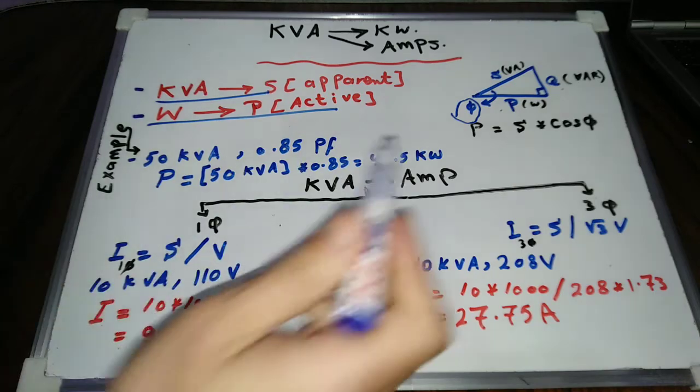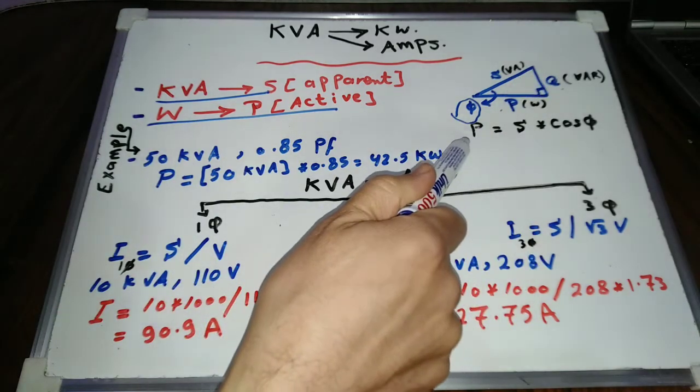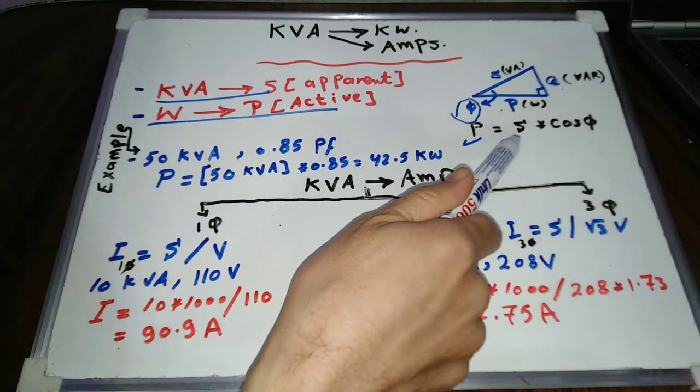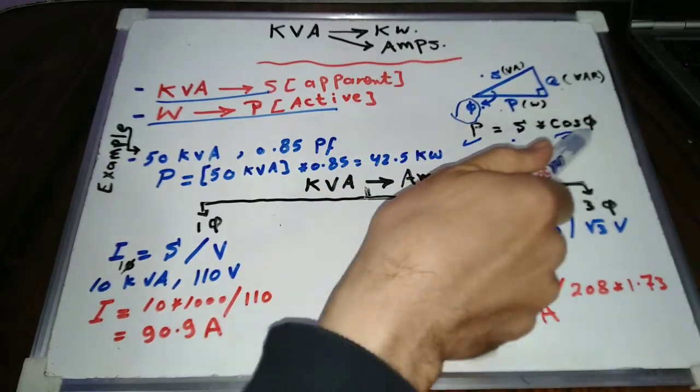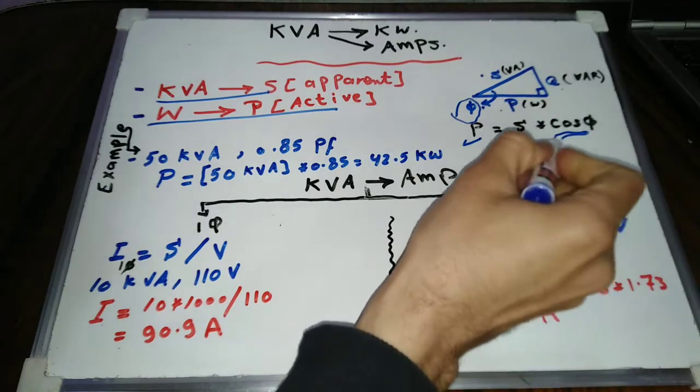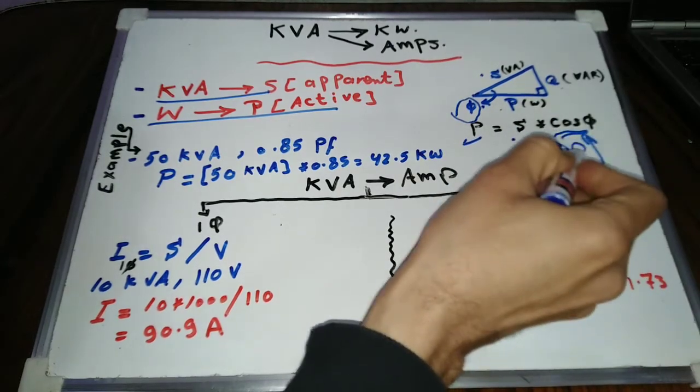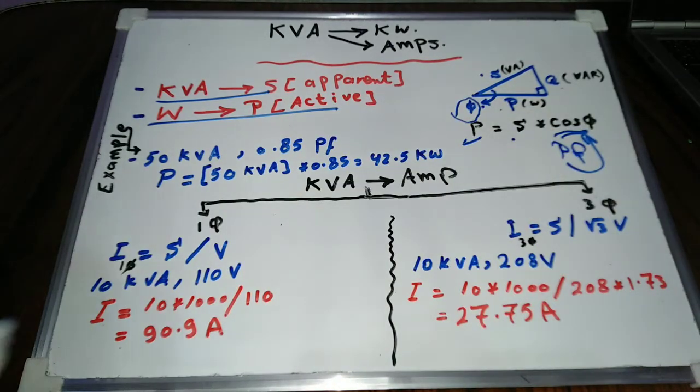From the power triangle, the kV ampere to kW formula is: P, active power in kW, equals S in kV ampere, multiplied by cosine the angle between them, or the power factor. This is the kV ampere to kW formula.